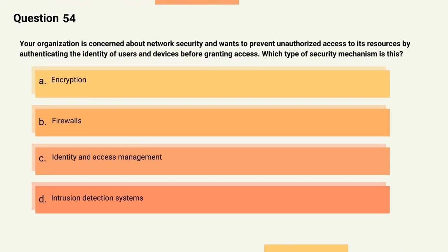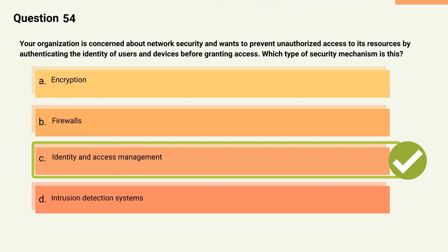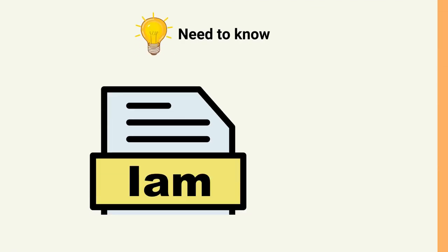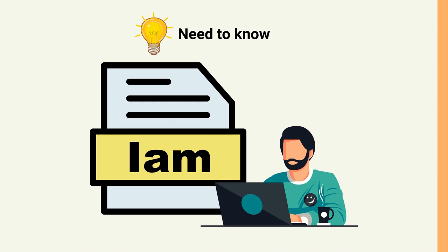Question 54: Your organization wants to prevent unauthorized access by authenticating the identity of users and devices before granting access. Which type of security mechanism is this? Options: A) Encryption, B) Firewalls, C) Identity and Access Management, D) Intrusion detection systems. The correct answer is Option C, Identity and Access Management (IAM). Explanation: IAM is a security mechanism used to authenticate the identity of users and devices before granting access to resources. It includes authentication, authorization, and accounting (AAA) mechanisms.